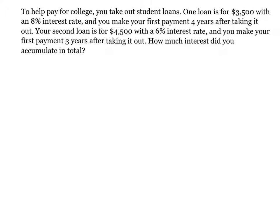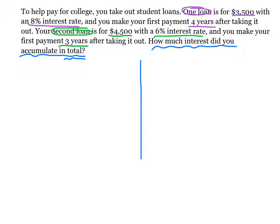Our last example says that to help pay for college, you take out student loans. One loan, we'll do this one in purple. The first loan is for $3,500 with an 8% interest rate. And you make your first payment 4 years after taking it out. Your second loan is for $4,500 with a 6% interest rate. And you make that first payment 3 years after taking it out. How much interest did you accumulate in total? So to start, I'm going to divide my page in half. One loan and the second loan.